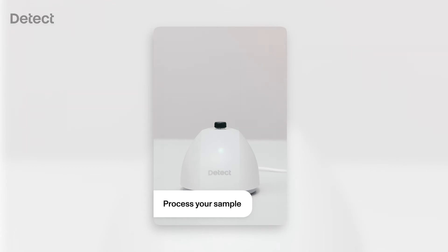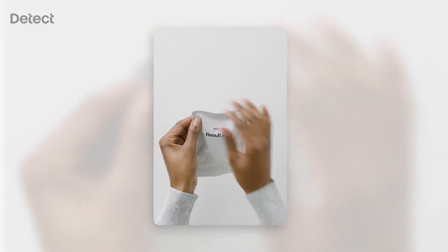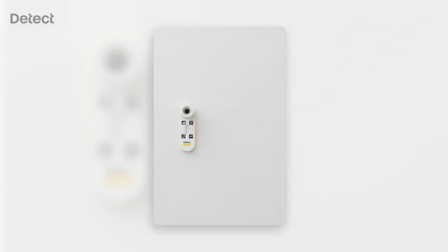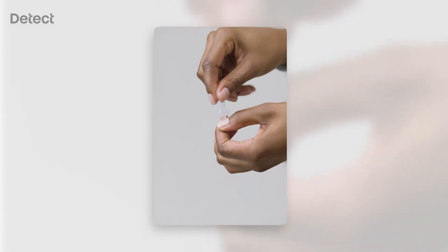When it's complete, the green light will stop blinking. Once your sample has processed, open the result pack. Take out the reader and remove the dropper from its pouch. Pick up the dropper by its tip and flick it downward to collect all of the liquid at the bottom. Carefully twist off the tip.